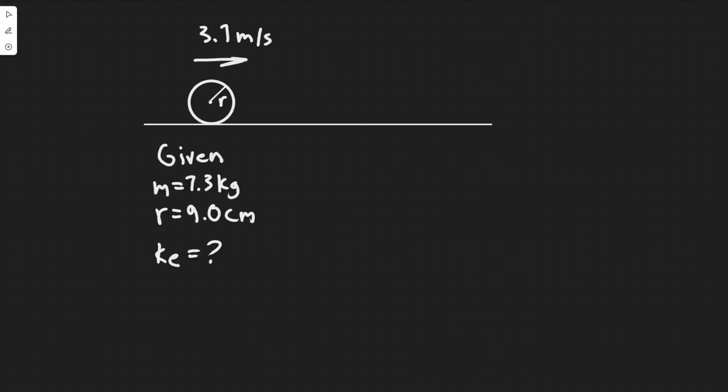In this problem we're told that a bowling ball of mass 7.3 kilograms and radius 9 centimeters rolls without slipping down a lane at 3.7 meters per second. Calculate its total kinetic energy.